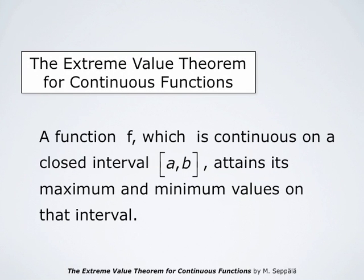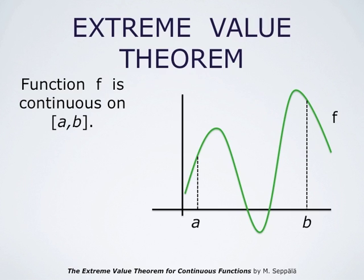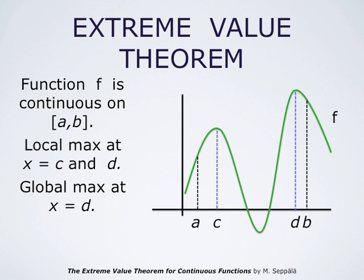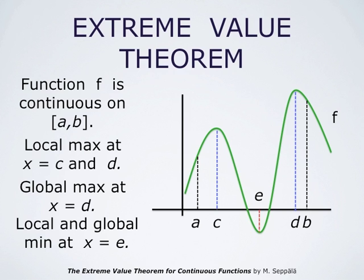The extreme value theorem for continuous functions states that a function which is continuous on a closed interval from a to b attains its maximum and minimum values on that interval. Here we have the graph of a function f continuous on the closed interval from a to b. It has local maximum points at x equals c and x equals d, and since f at d is larger than f at c, x equals d is the global maximum point, while x equals e is a local and global minimum point.